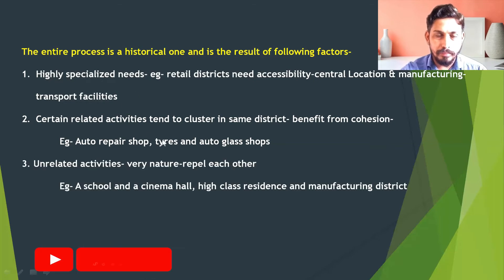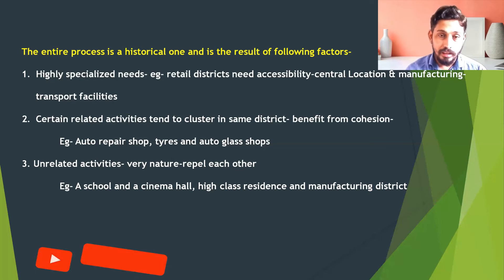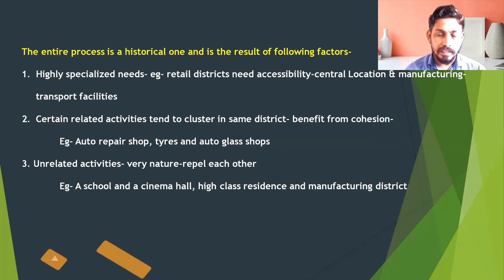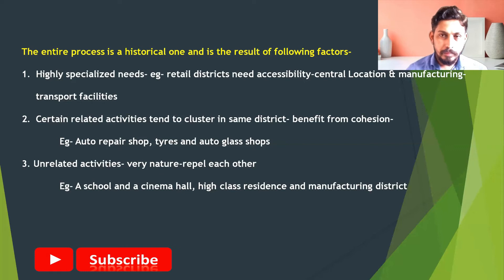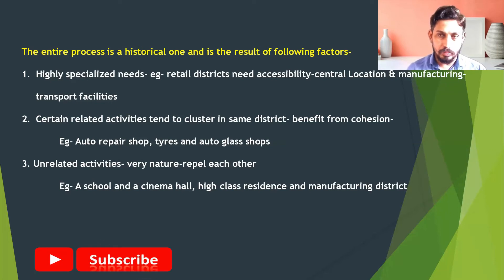The third factor involves unrelated and repelling activities, which are not favorable for the formation of a single center. Certain unrelated activities repel each other by their very nature — for example, a school and a cinema hall repel each other, so they are not formed in a single nucleus. This creates a separate nucleus for entertainment and a separate nucleus for the school, resulting in two different nuclei due to the different nature of their activities.